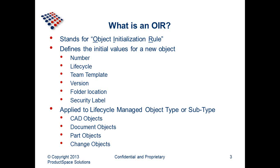The first thing we want to look at is: what is an OIR? It stands for Object Initialization Rule. What it does is it defines the initial values for new objects. For instance, it defines the number, if you happen to be using auto-generating numbers. It defines the lifecycle those objects are going to use, the team template, version, folder location, and security labels. So it defines all of the initial characteristics of all of these objects.